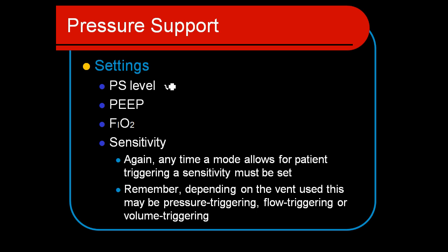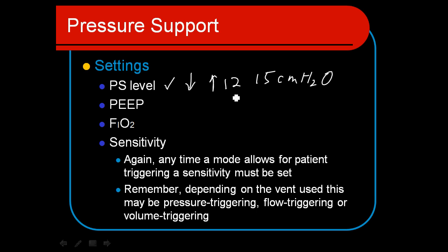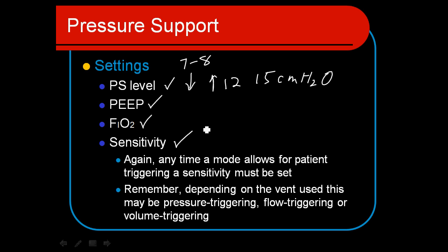Looking at our settings: the pressure support level will be low if we want the patient to do lots of work of breathing. A high level would be about 12 to 15 centimeters of water pressure; a low level would be around 7 to 8 centimeters of water pressure. Anything lower than that and we're probably just overcoming the work of breathing through the endotracheal tube. We'll also set a PEEP level — a good place to be is plus 5 — along with FiO2 and sensitivity, depending on what the patient needs.